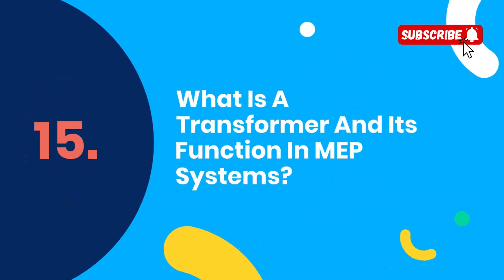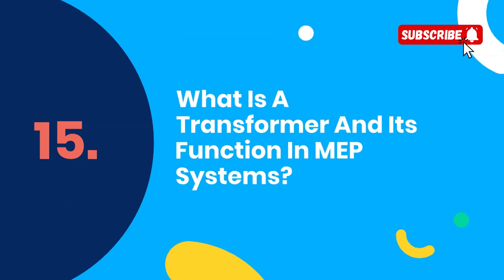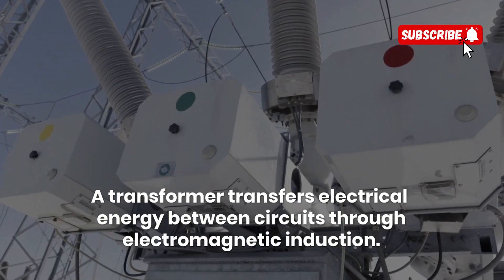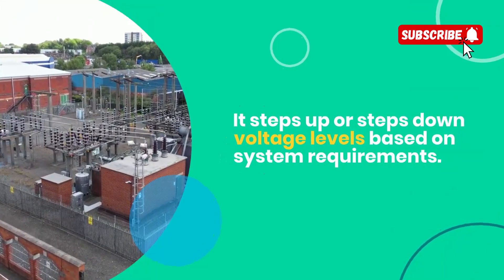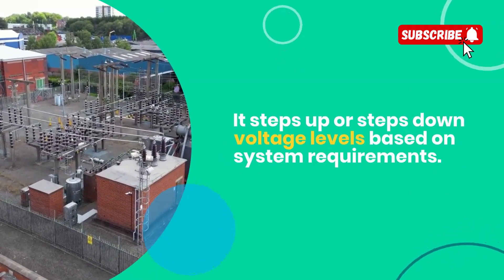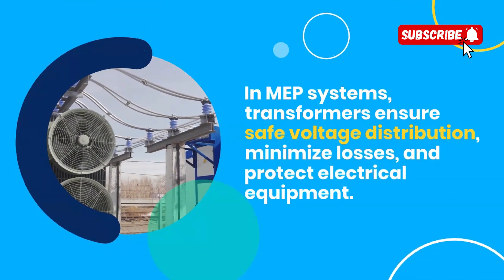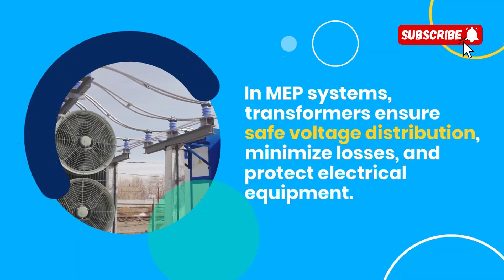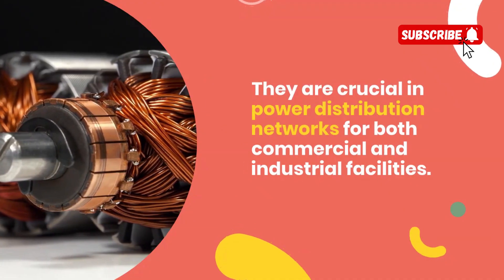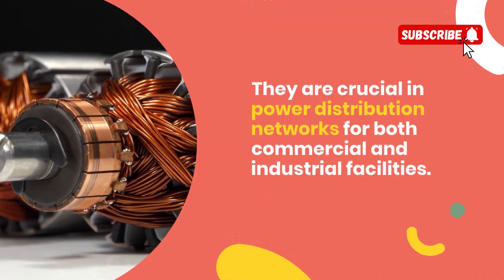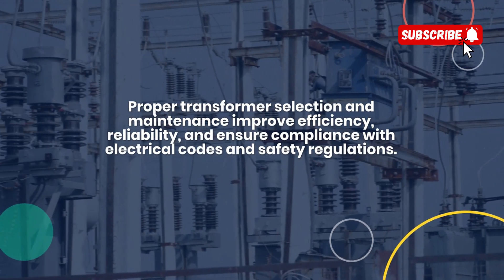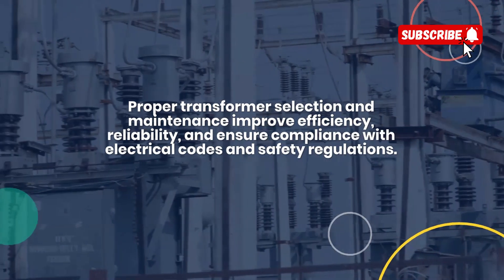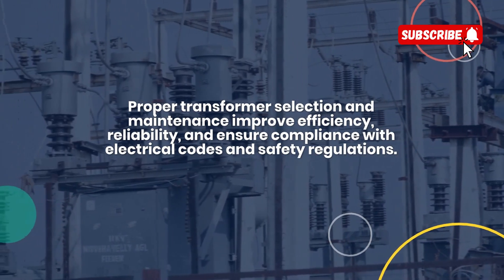Question 15: What is a transformer and its function in MEP systems? A transformer transfers electrical energy between circuits through electromagnetic induction. It steps up or steps down voltage levels based on system requirements. In MEP systems, transformers ensure safe voltage distribution, minimize losses, and protect electrical equipment. They are crucial in power distribution networks for both commercial and industrial facilities. Proper transformer selection and maintenance improve efficiency, reliability, and ensure compliance with electrical codes and safety regulations.